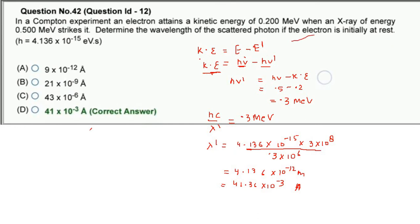Summary of the Compton equation: KE = hν − hν'. Here hν = 0.5 MeV is the incident x-ray energy, hν' = 0.3 MeV is the scattered photon energy, and KE = 0.2 MeV is the kinetic energy gained by the electron initially at rest. यह समझना बहुत ज़रूरी है।